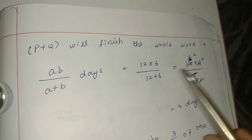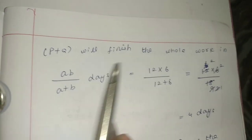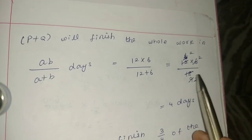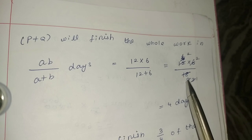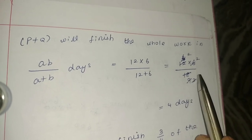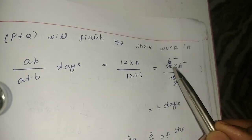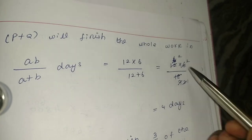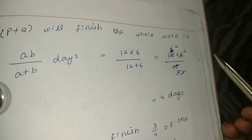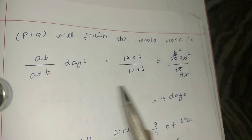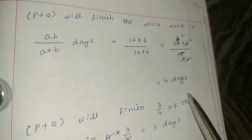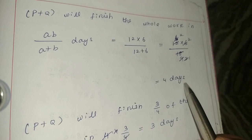12 plus 6 is 18. So 12 into 6 divided by 18. Solving: 72 divided by 18 equals 4. So P and Q together finish the whole work in 4 days.